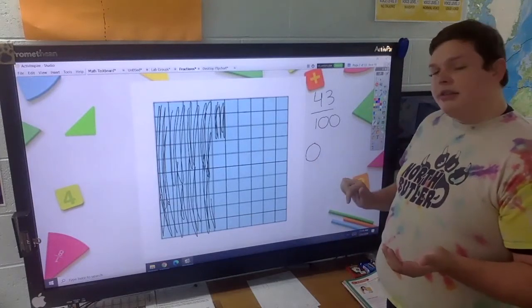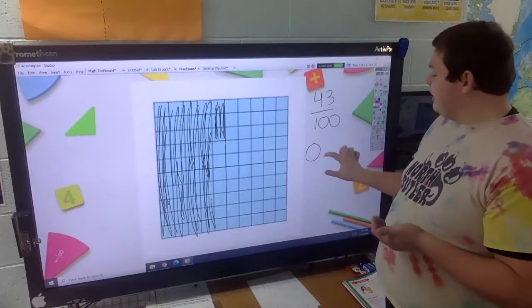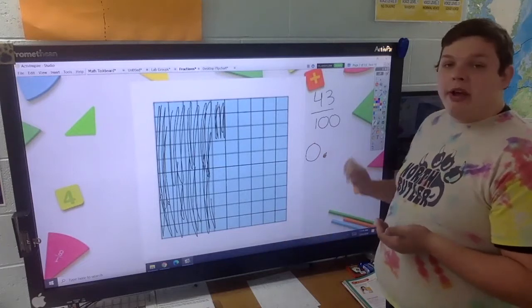As a decimal, it would look like this. We have zero as our whole. We don't have a whole one filled in yet. Don't forget your decimal point. That's super important.